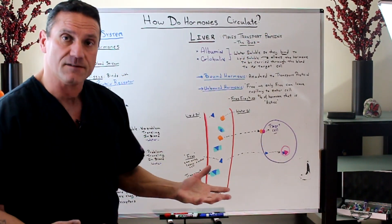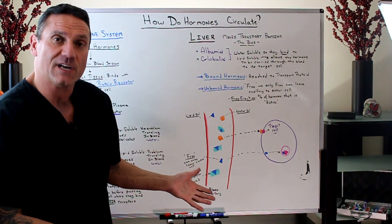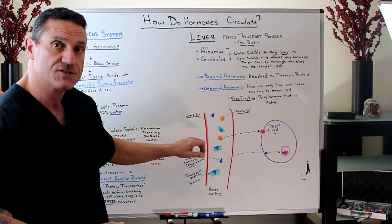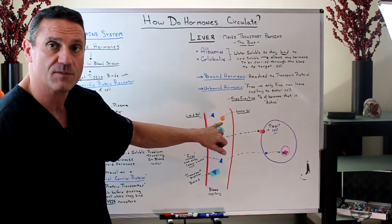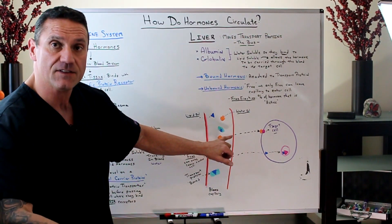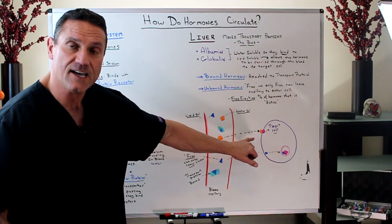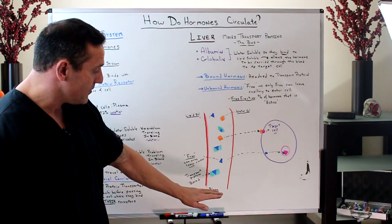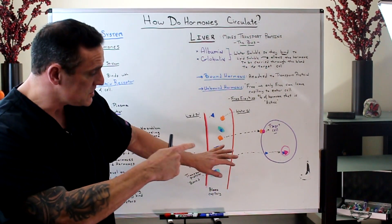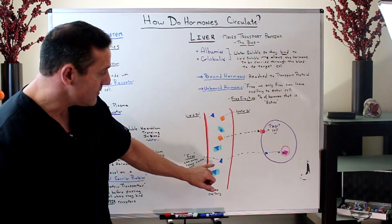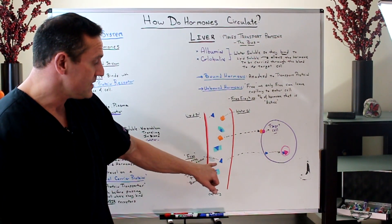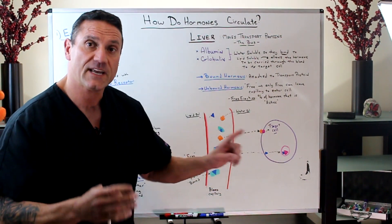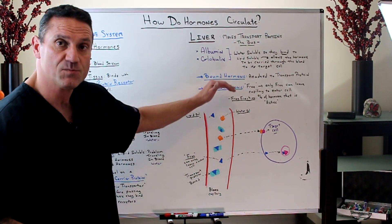As an example using a diagram of the blood capillary — I'm not the greatest artist — you have hormones circling throughout the bloodstream. A water-soluble hormone is free and can easily leave the bloodstream to enter the target cell and do its thing on the receptor. Then you have the bound hormone on the bus, which carries the hormone to the target cell to be released. The lipid-soluble hormone gets let off and is then free to enter the cell, but only through the transport system.